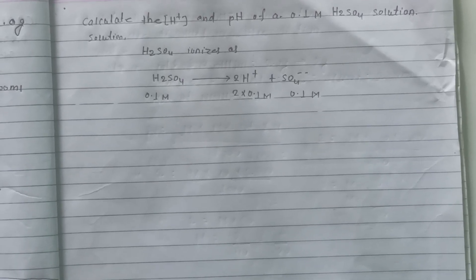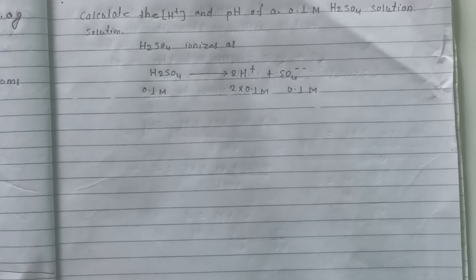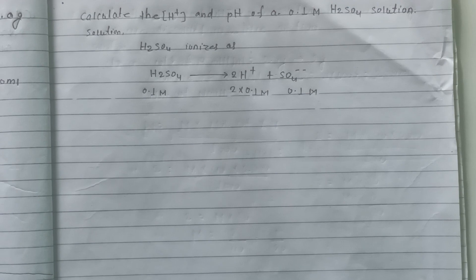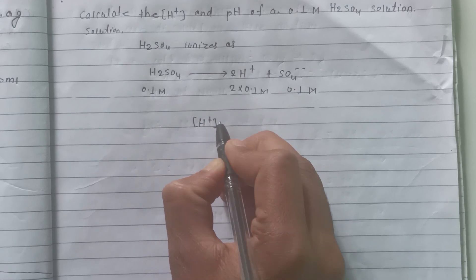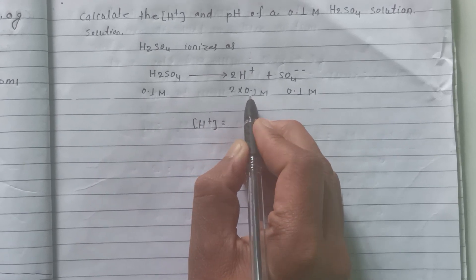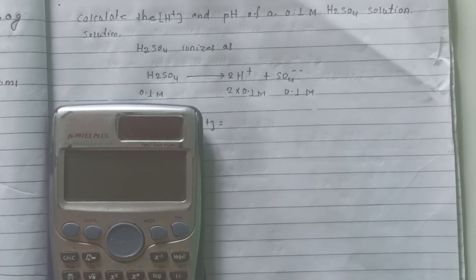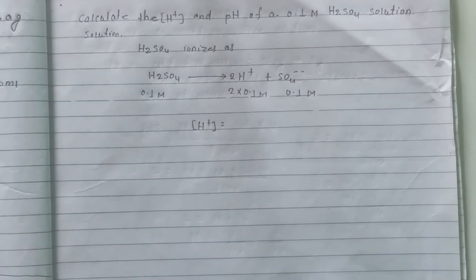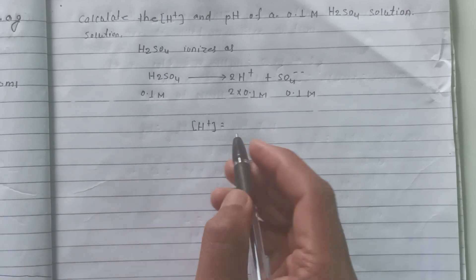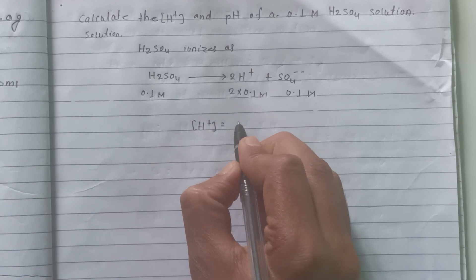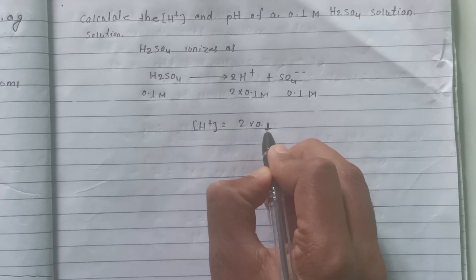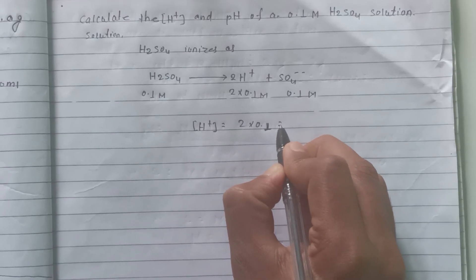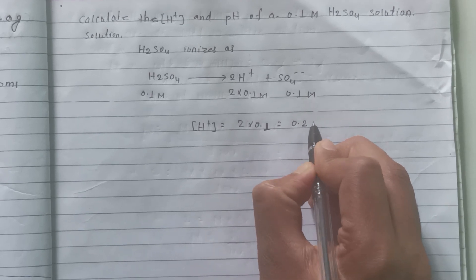Hydrogen ion concentration is 2 × 0.1, which equals 0.2M.